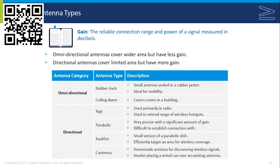Directional antennas come in multiple types. The Yagi type is a directional antenna used primarily in radio, but also employed in long-distance wireless networking to extend the range of hotspots. Parabolic is very precise with a significant amount of gain, though it is difficult to establish a connection because of how precise it is. Backfire is a small directional antenna that looks like a parabolic dish but has less gain, used to efficiently target a specific physical area at a distance without overlapping and overextending coverage.